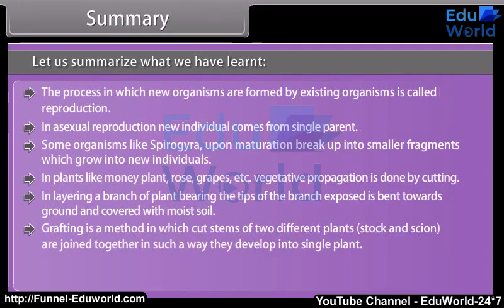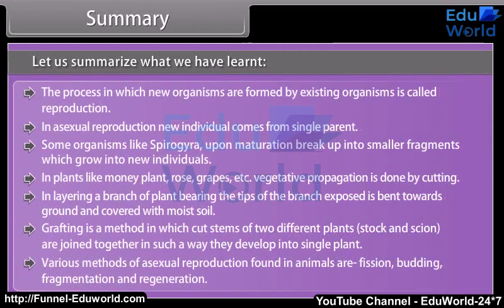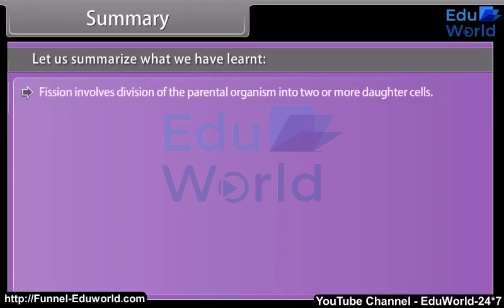Grafting is a method in which cut stems of two different plants — stock and scion — are joined together in such a way that they develop into a single plant. Various methods of asexual reproduction found in animals are fission, budding, fragmentation, and regeneration. Fission involves division of the parental organism into two or more daughter cells and is of two types: binary and multiple fission.